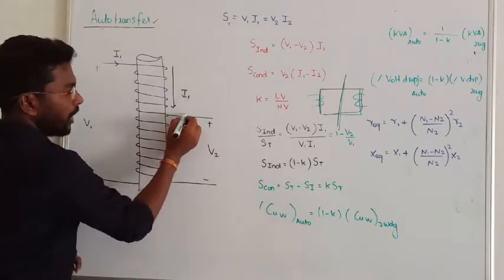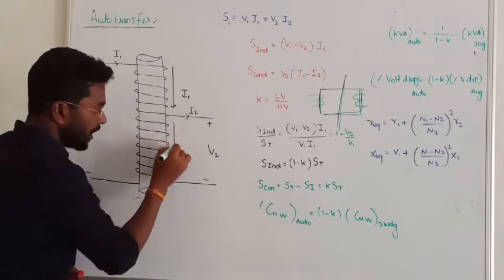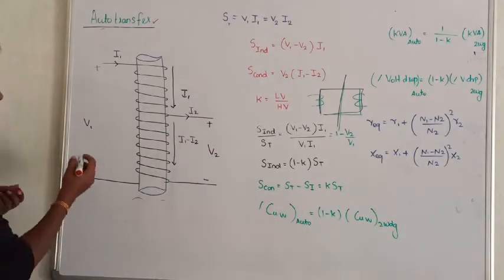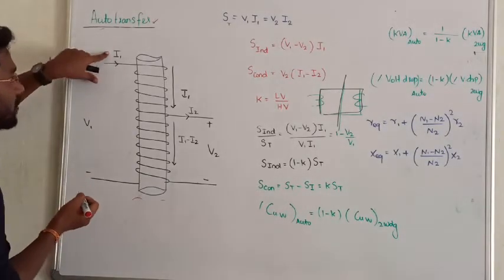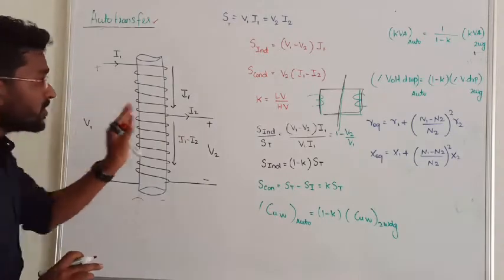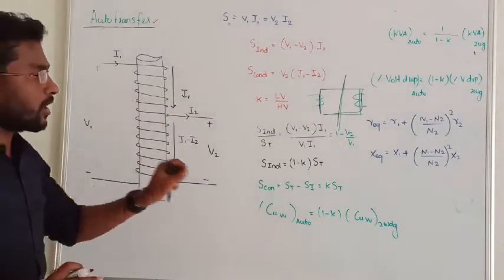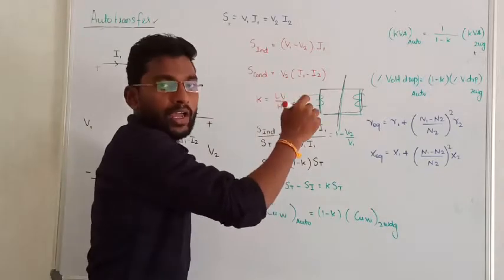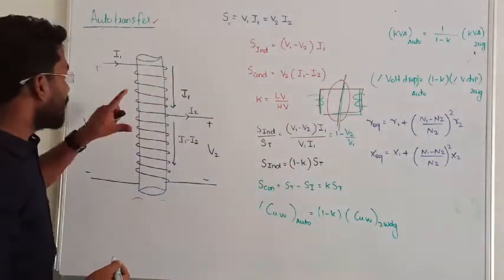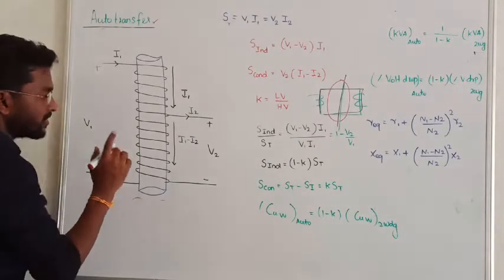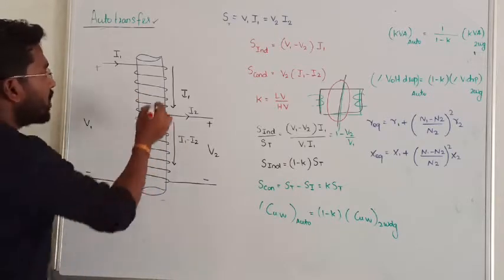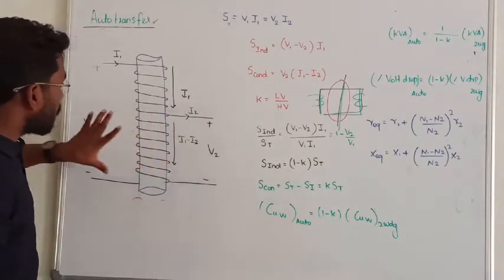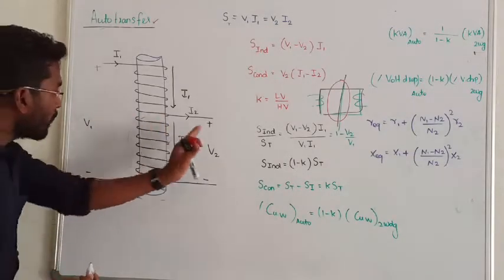In an autotransformer, the primary applied voltage is V1, primary current is I1, secondary voltage is V2, and secondary current is I2. Applying KCL, the current in the common winding is I1 minus I2. There are two zones of power transfer: one where power is transferred conductively and another where power is transferred inductively. The common winding is shared between primary and secondary.